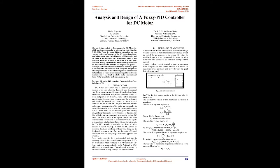I. Introduction: DC motors are widely used in industrial processes because of their high reliability, flexibility and minimal cost. These motors are used in industrial applications, home appliances and in robot manipulators where the control of speed and position are required. Many control techniques were invented through which we can control the equipment and obtain the desired performance. A better control technique can be chosen for a DC circuit so that the performance characteristics of the motor are improved with its use.